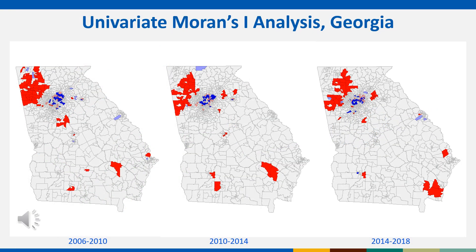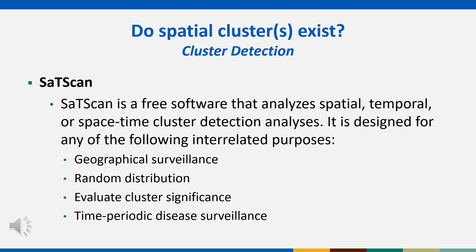Similarly, these are some results in Georgia where we are showing the importance of looking at changes over time. Here we can see some areas where the rates are high and neighboring geographies are also high, which point to some places to potentially examine the data further. After running our quantitative and qualitative clustering analysis, we can move on to cluster detection techniques.